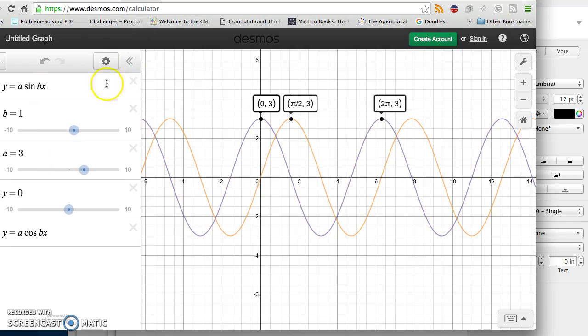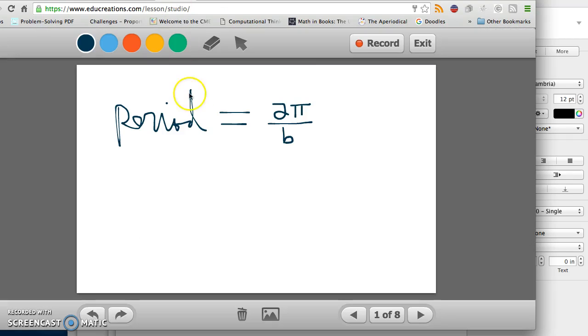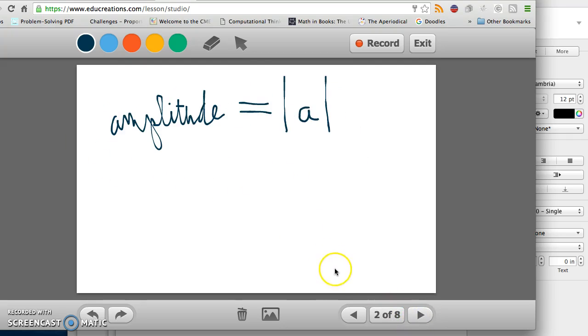I would encourage you to go on Desmos.com and play with this. Desmos.com slash calculator and play with it yourself. And see if you can preview what you're going to learn next. But, to summarize the main details, again, for cosine, the period is 2 pi over B. The amplitude is the absolute value of A. The midline so far, for all the ones we're doing, is Y equals zero.